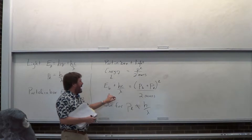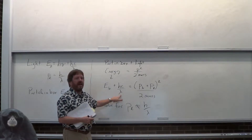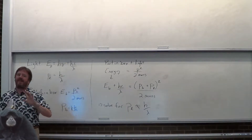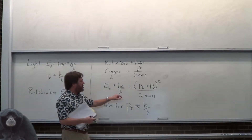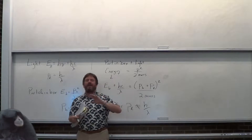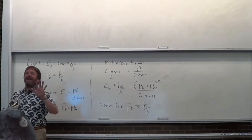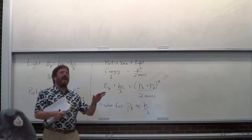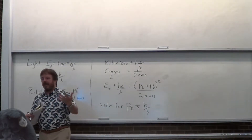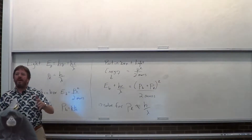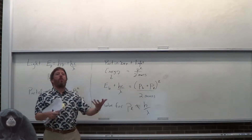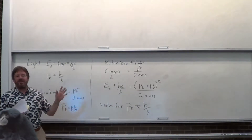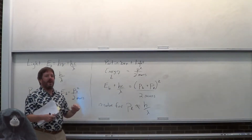The particle in the box cannot absorb the photon's energy and account for its momentum at the same time. If it absorbs the energy, it also needs to absorb the momentum, but it just doesn't add up. When nature runs into a problem like violating a fundamental conservation law, nature's answer is: I'm not going to do that. So it can't absorb light. If it can't absorb light, you just can't tell whether it's moving left or right.